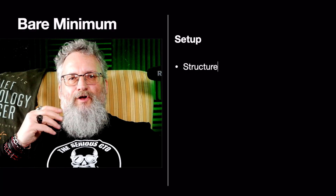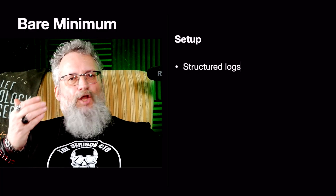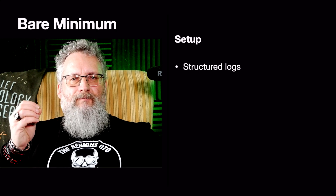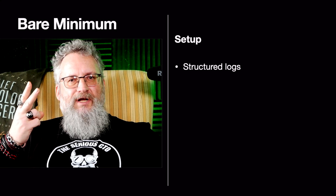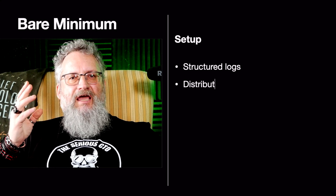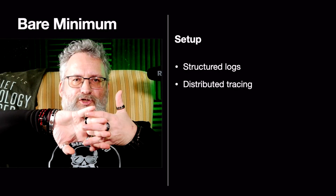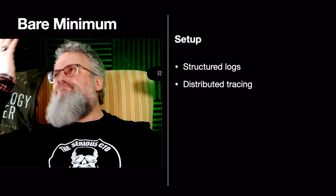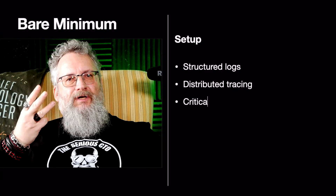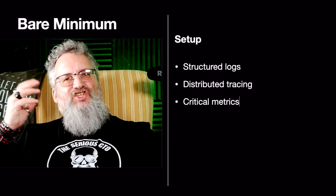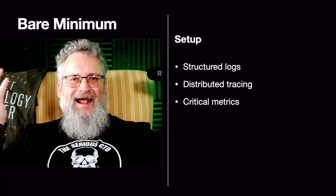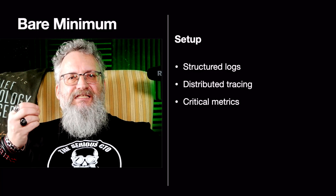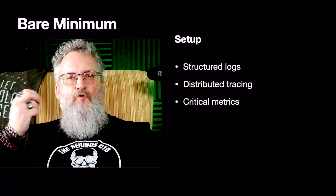Structured logs — forget plain text, use JSON so tools can parse them. Distributed tracing — link every request across services, no more black holes. Critical metrics — not just CPU and RAM. Track failures, latency, and throughput.